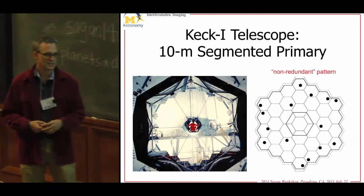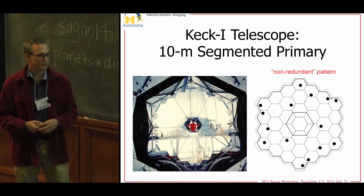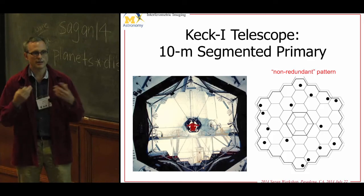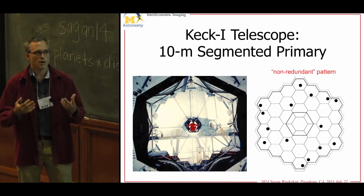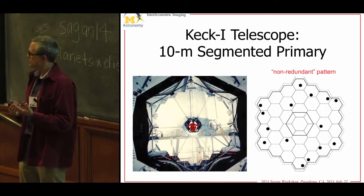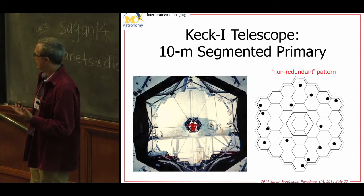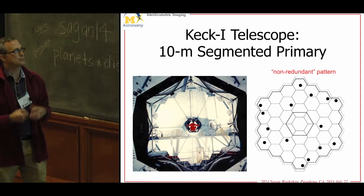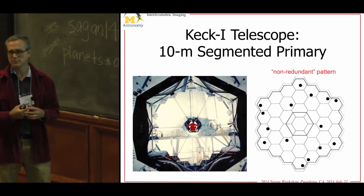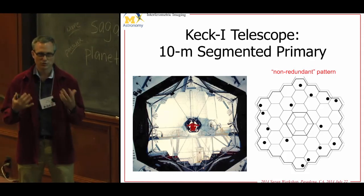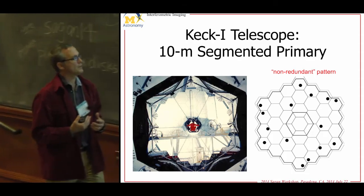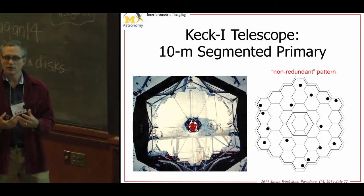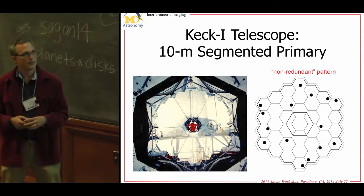During my thesis at Berkeley with Peter Tuthill and Bill Danchi, we carried this from initial experiments on the William Herschel Telescope done by Cambridge, further to the Keck Telescope — before there was adaptive optics. This was really one of the only ways to get at the diffraction limit at that time.